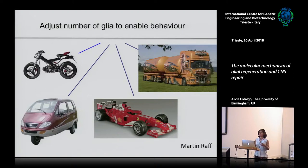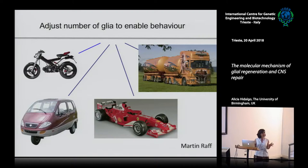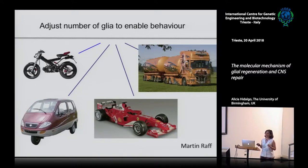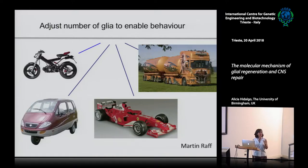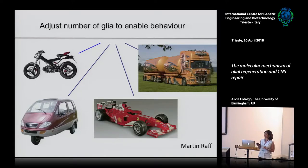When I started my lab, when I started trying to work on these problems, I was very inspired by Martin Ruff. Martin Ruff did a lot of work on glia in the mammalian system. The idea that particularly caught my attention was that he proposed that glial cells adjust their number to the requirements of a circuit. If you think of the wheels as the glial cells here, the more complex your circuitry becomes, the more glial cells you need.